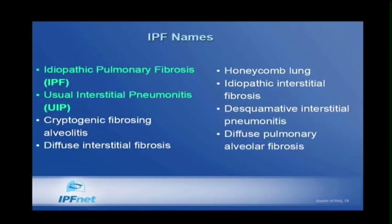UIP, or usual interstitial pneumonitis, is a description of the pathologic findings. The British call it cryptogenic fibrosing alveolitis. Other names include diffuse interstitial fibrosis, honeycomb lung, idiopathic interstitial fibrosis, et cetera.